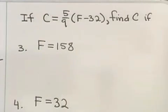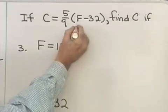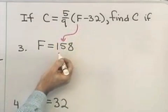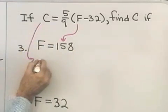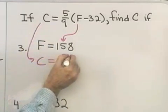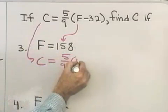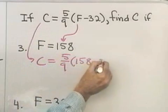We have C is equal to 5 9ths times the quantity F minus 32. A little different version of the formula that we showed right in the beginning of this lesson. Now we want to find C if F is equal to 158. So I'm simply going to take 158, replace F with that, and then calculate what C is. So C is equal to 5 9ths times 158 minus 32.